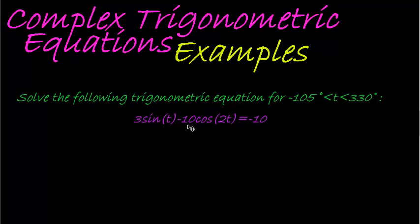3 sin t minus 10 cos 2t. But we run into a little bit of a problem because changing sin into cos and cos into sin is not that easy. But we notice something else here. We're not just working with the same interior angles.